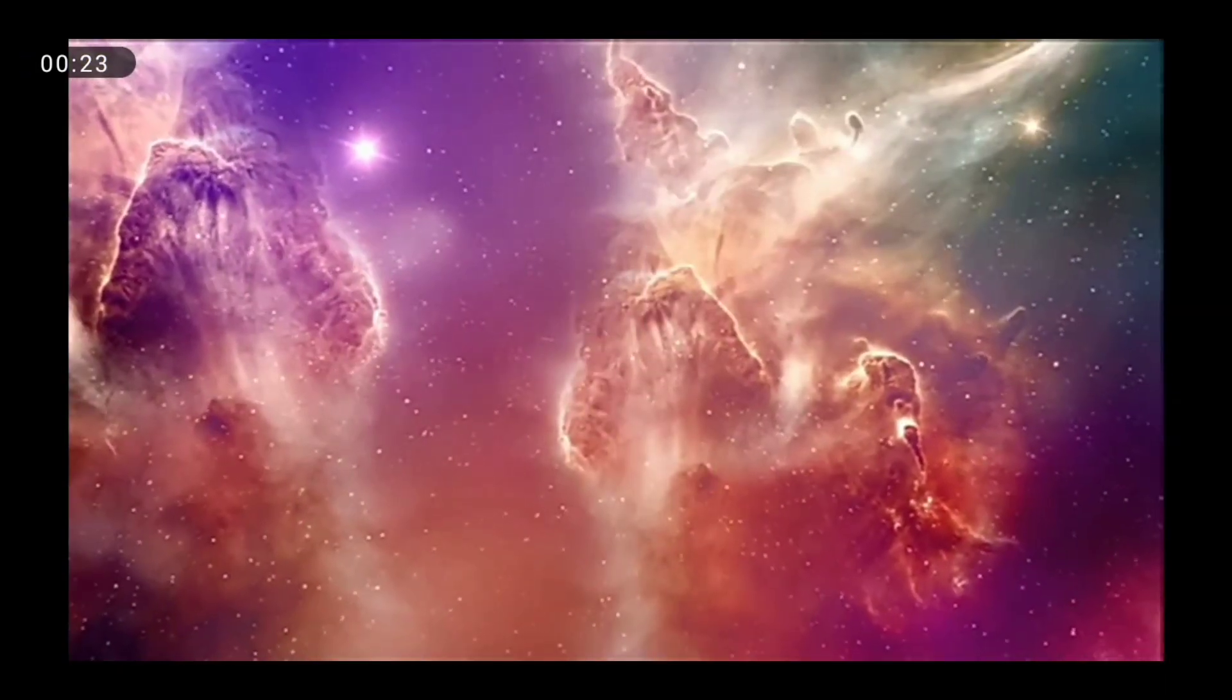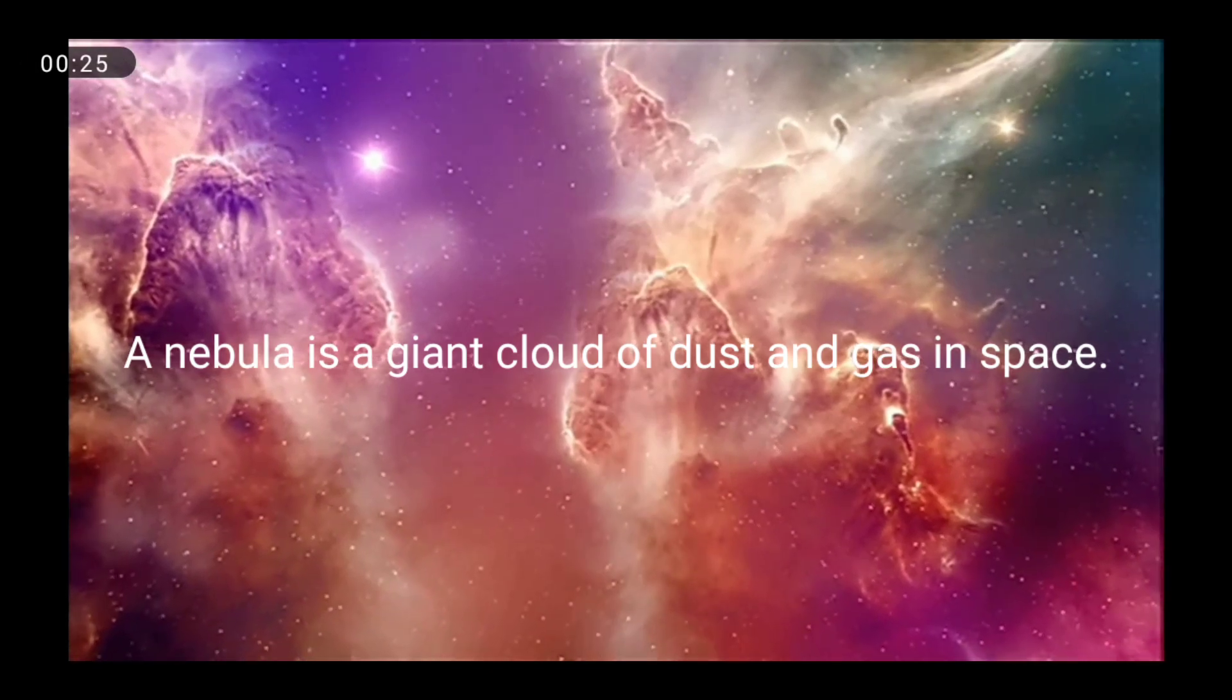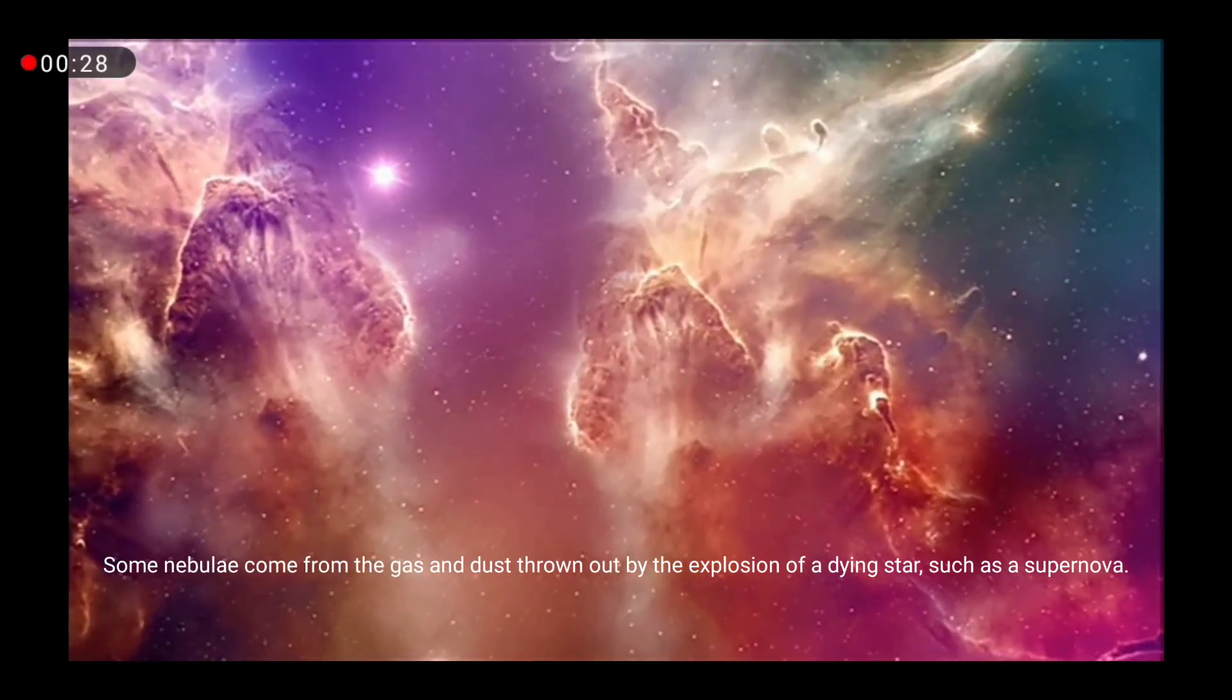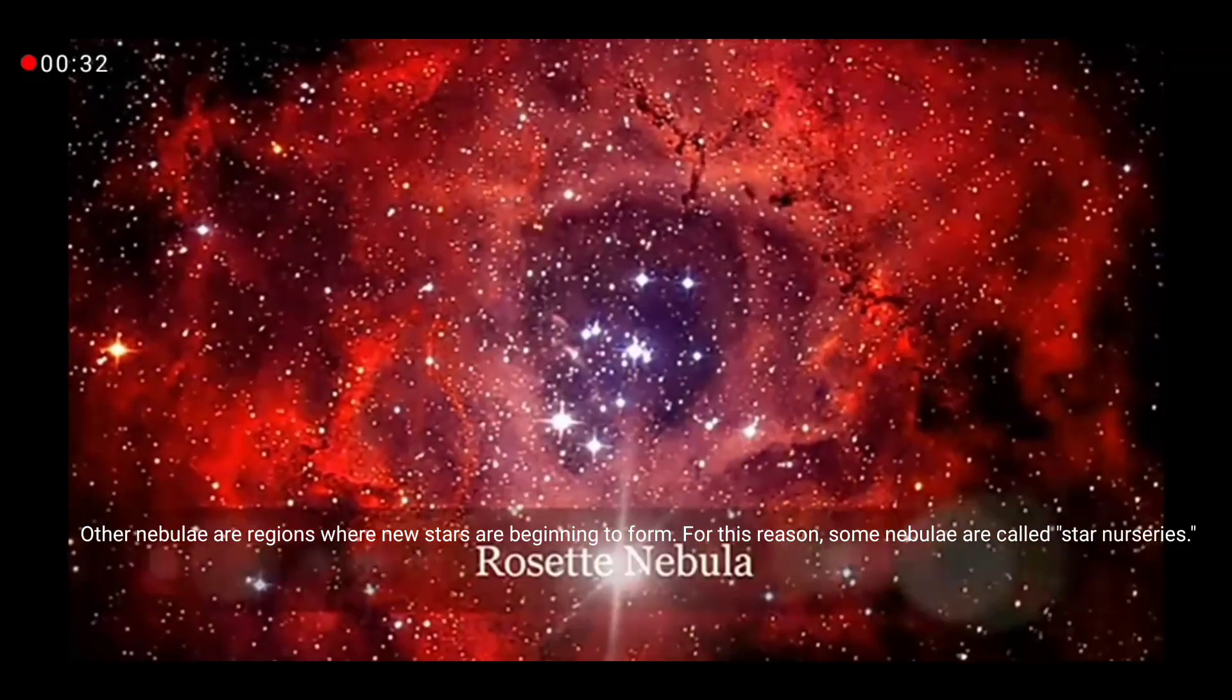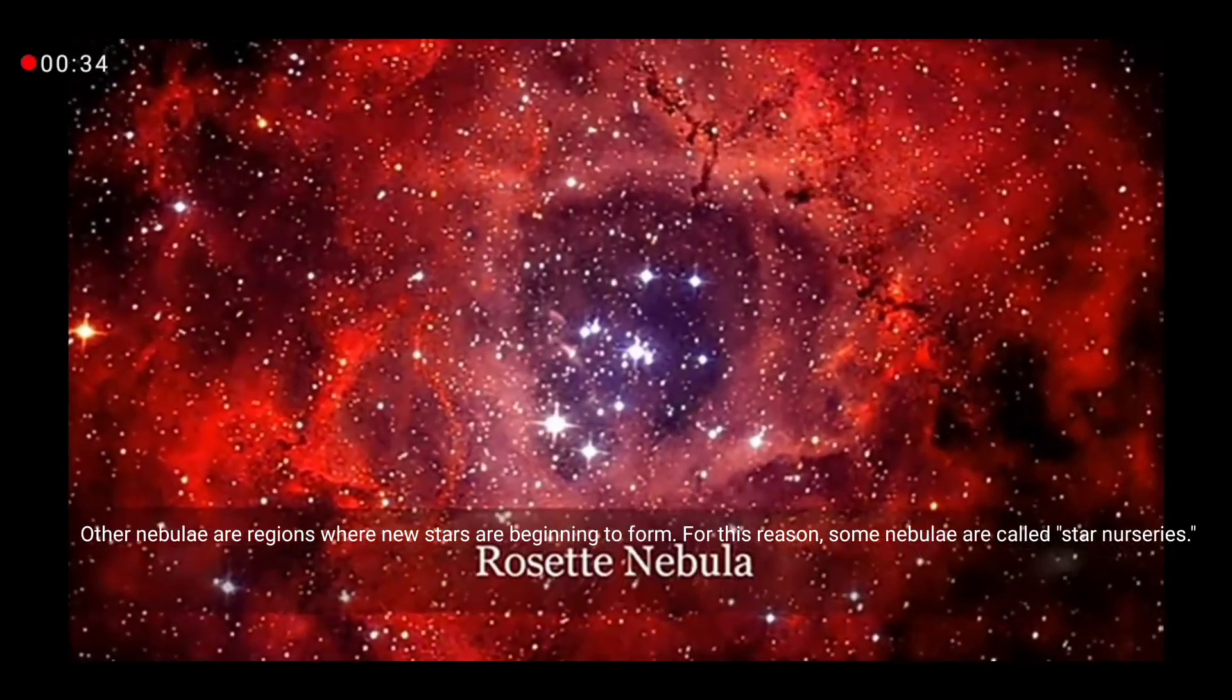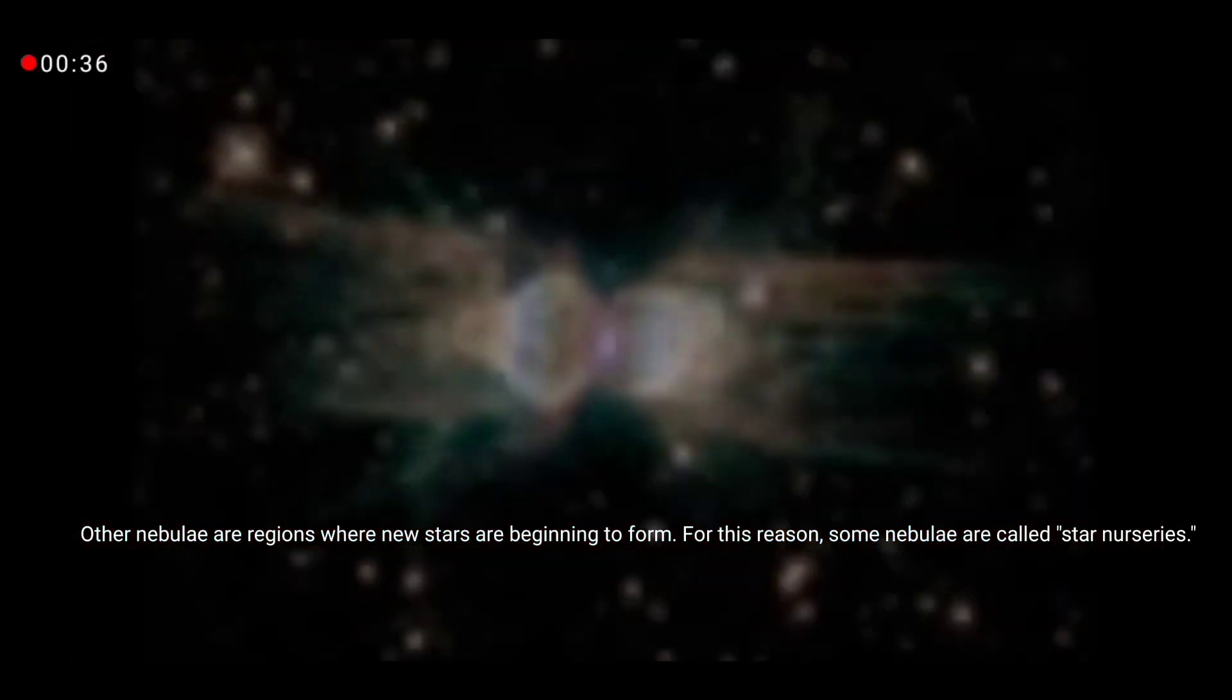A nebula is a giant cloud of dust and gas in space. Some nebula come from the gas and dust thrown out by the explosion of a dying star, such as a supernova. Other nebulae are regions where new stars are beginning to form. For this reason, some nebulae are called star nurseries.